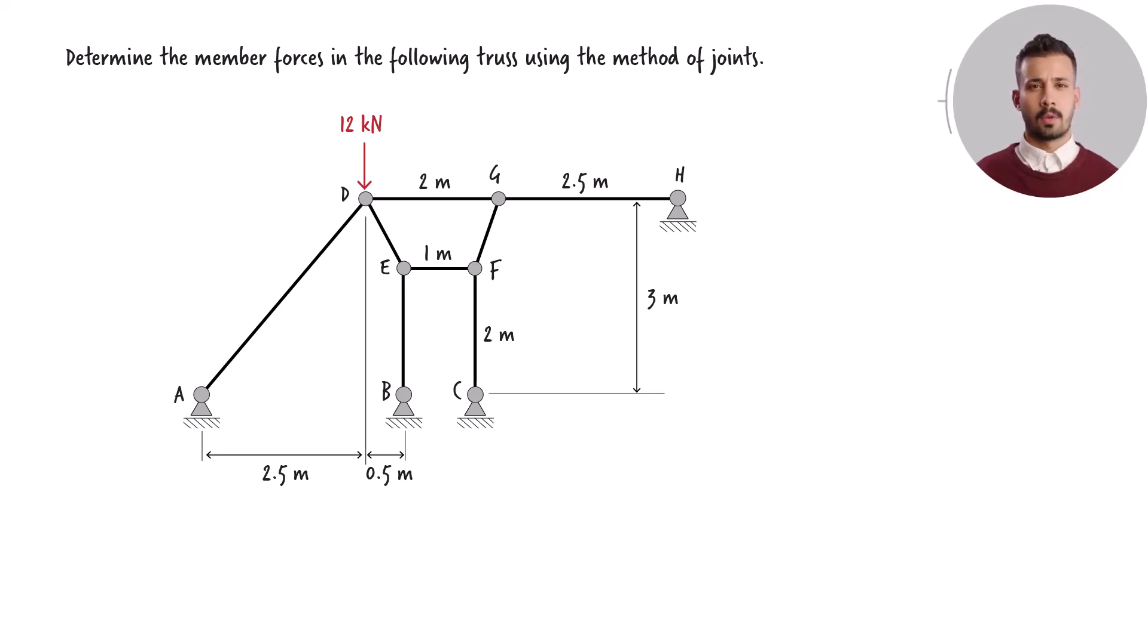A truss structure rests on four pin supports. We want to calculate the forces acting in each member and the reactions at the supports due to the applied load. The presence of four supports might suggest that the truss is statically indeterminate, but a more detailed analysis reveals that we have a statically determinate structure.